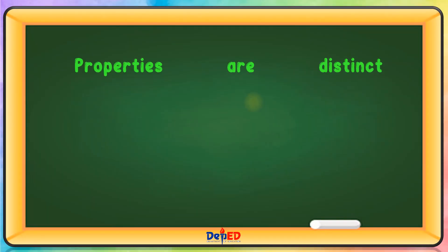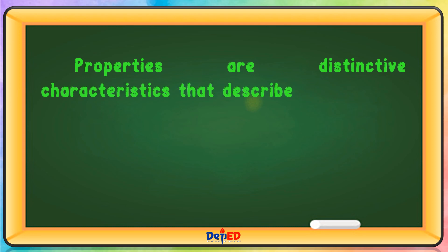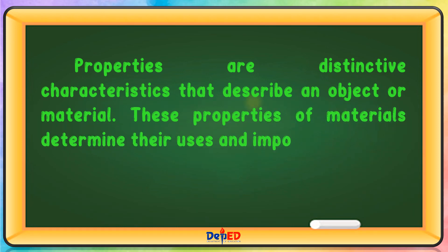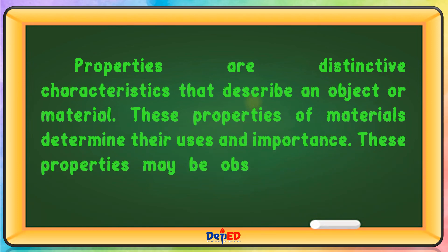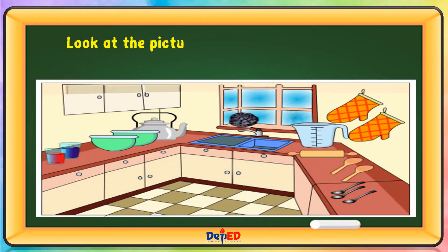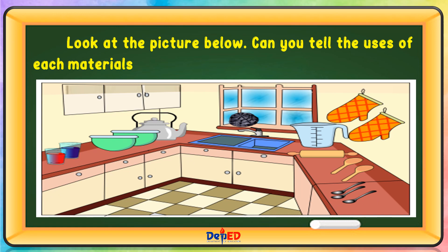Properties are distinctive characteristics that describe an object or material. These properties of materials determine their uses and importance. Look at the picture below — can you tell the uses of each material found in the kitchen?